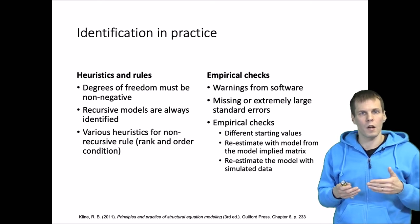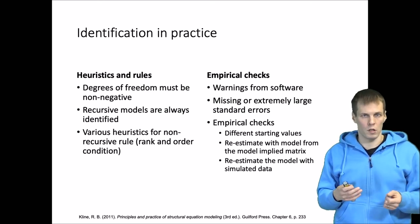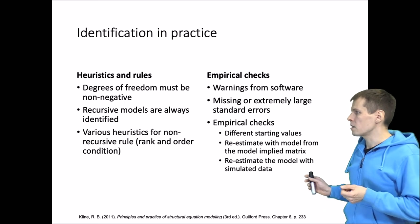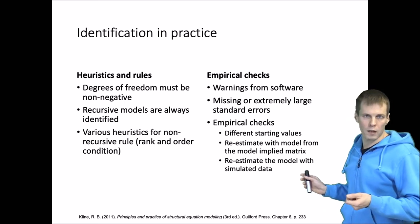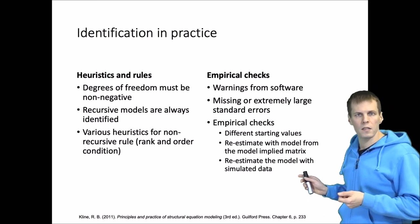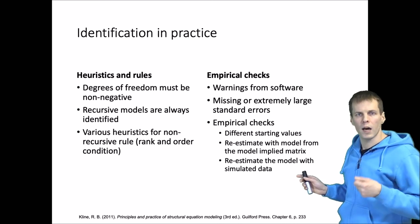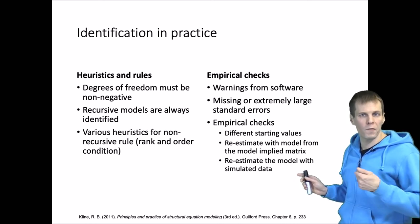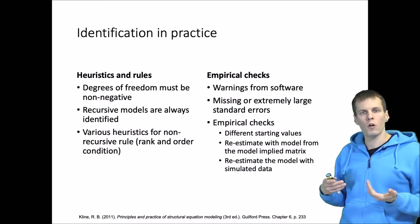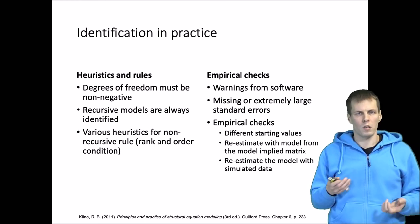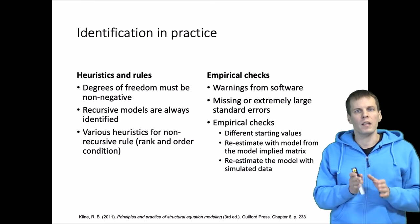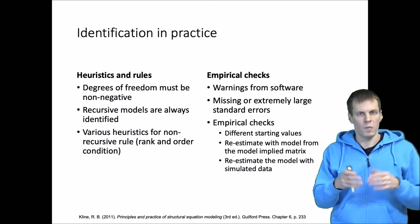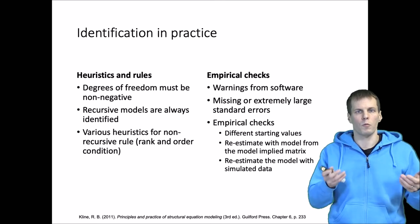If you get a different result, then for sure the model is not identified. A final strategy is to re-estimate the model with simulated data. This is a good strategy because you don't need to have the data at hand — it can be done before data collection. If you're not sure whether the model is identified or not, generate a data set from a large sample like 100,000 or a million observations.